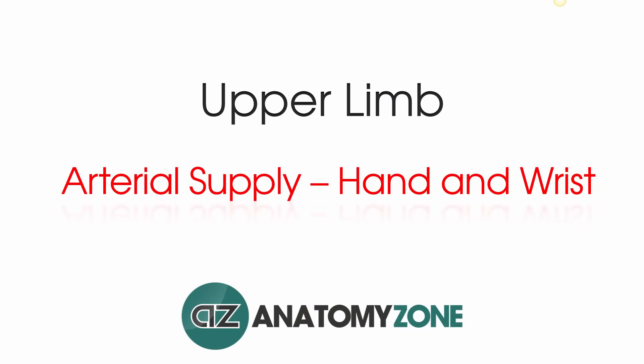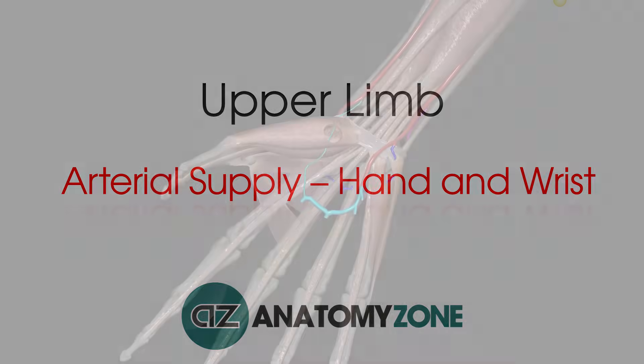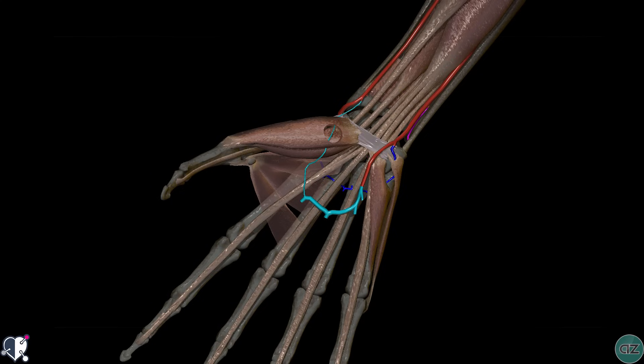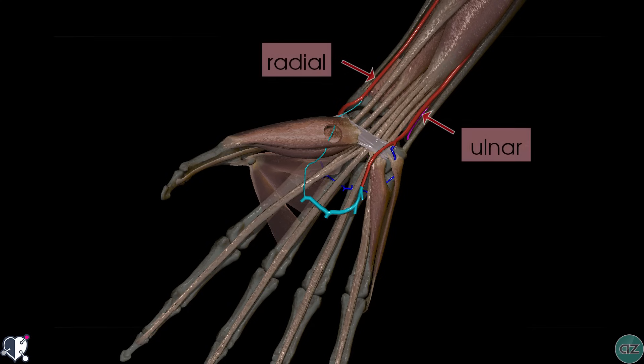Hi, this is Peter from AnatomyZone and in this tutorial we're going to take a look at the arterial supply to the hand and the wrist. This tutorial follows on from the one I did on the arterial supply to the arm and the forearm. What we're looking at here is an anterior view of the distal forearm and the hand. We can see the radial and ulnar arteries which provide the arterial supply to the hand and the wrist via various different branches.